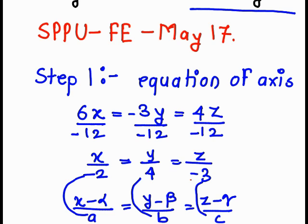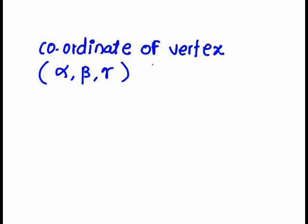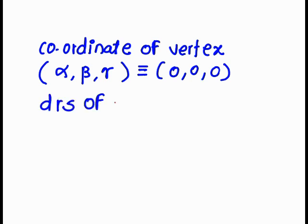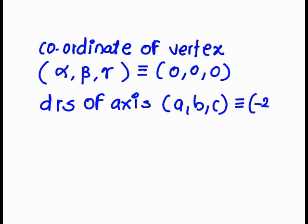There is no translation term, so z minus 0 we can write, giving γ = 0. Similarly, β = 0 and α = 0. So we get the coordinates of the vertex as (0, 0, 0), and the direction ratios of the axis are a, b, c = minus 2, 4, minus 3.